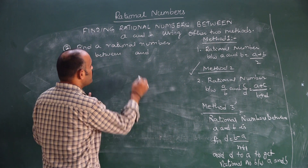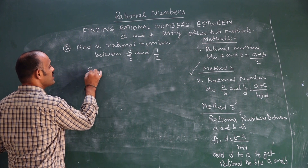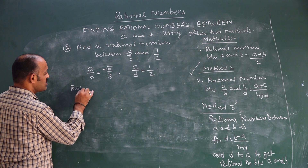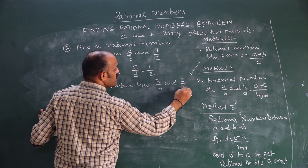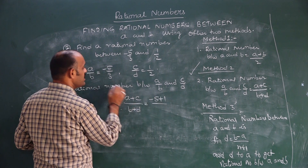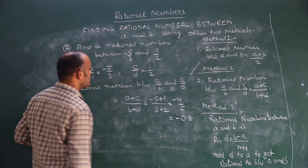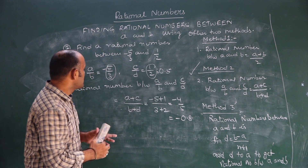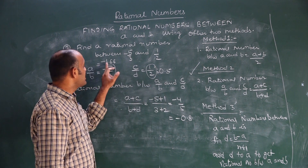Let's see one more question. Find the rational number between minus 5 by 3 and 1 by 2. Here, A by B is minus 5 by 3 and C by D is 1 by 2. The rational number between A by B and C by D equals A plus C by B plus D, which gives minus 5 plus 1 by 3 plus 2, so minus 4 by 5. Minus 4 by 5 means minus 0.8. Correct?